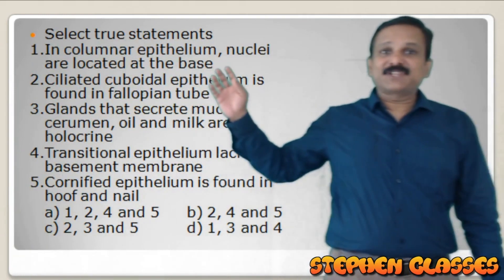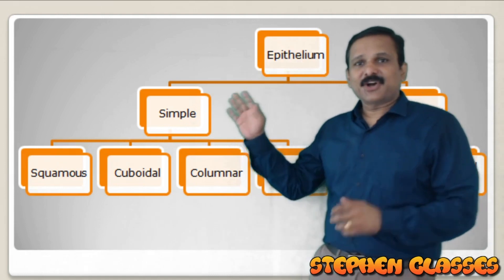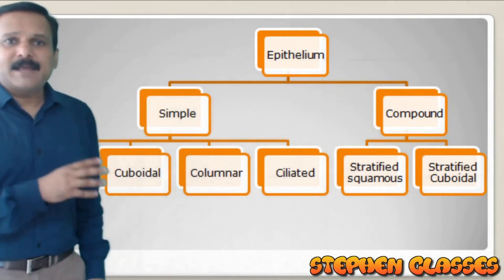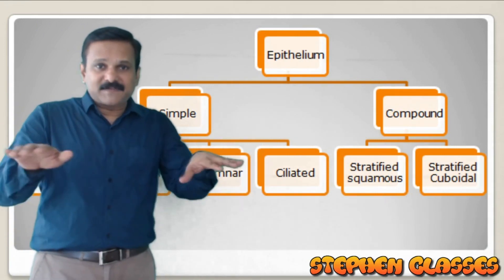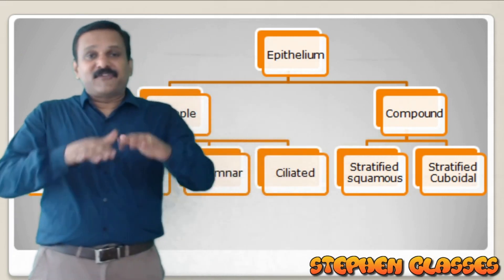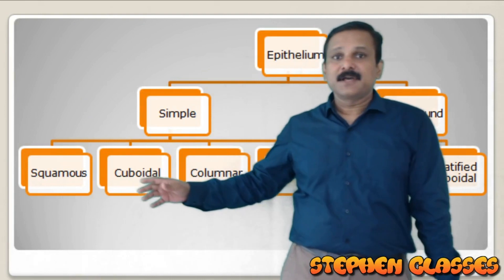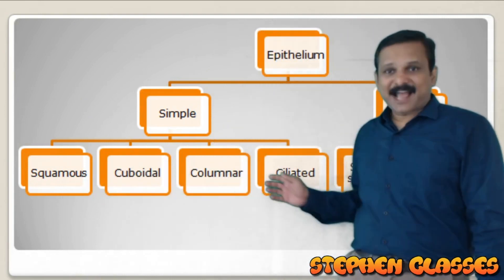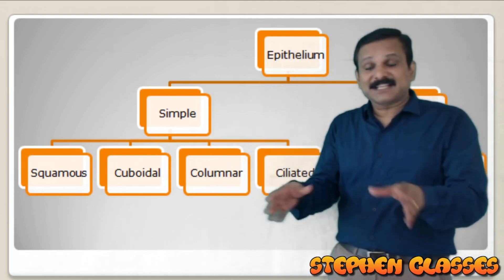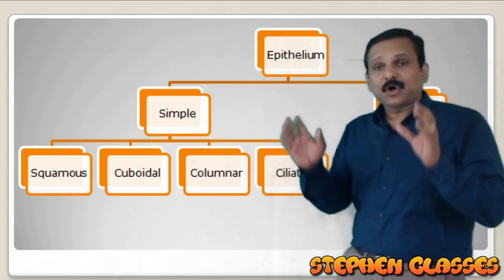The first question asks us to select the true statements, discussing the classification of epithelial tissue. Epithelial tissue is classified into simple as well as compound epithelium. Simple epithelium is a single-layered epithelium - only one layer of cells - whereas compound epithelium is multi-layered. Simple epithelium is further classified into squamous, cuboidal, columnar, and ciliated, based on the shape of the cell.